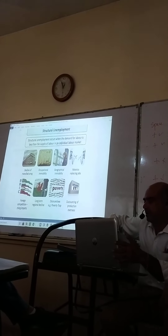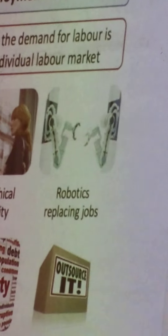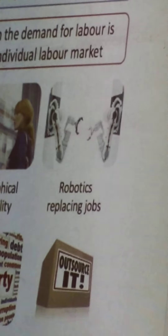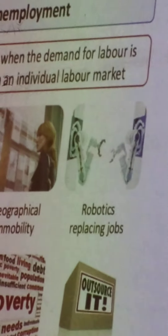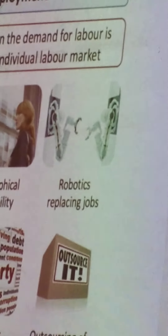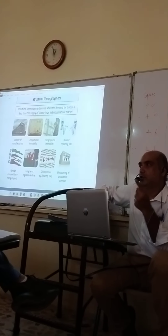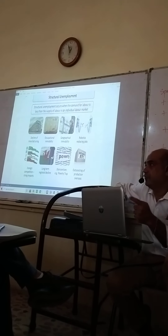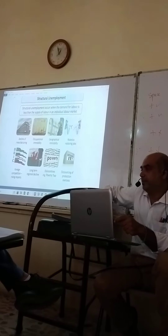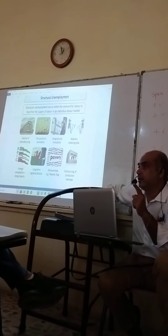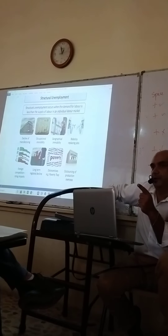Robotics replacing jobs — industries are becoming automated. Automation means becoming more technological, and that is basically replacing human workers with robots. Robots are programmed to do certain tasks, so they do repeated work. They save your cost of production in the long run and make perfect products, but lack the innovation or creativity which can be offered by humans only.